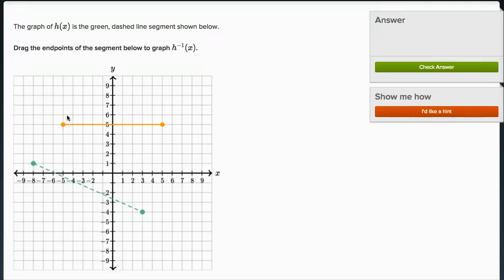And it's an interactive one where we can move this line around, and they tell us the graph of h of x is in green, so that's this dotted green line right over here. The graph of h of x is the green dashed line segment shown below. Drag the endpoints of the segment below to graph h inverse of x.